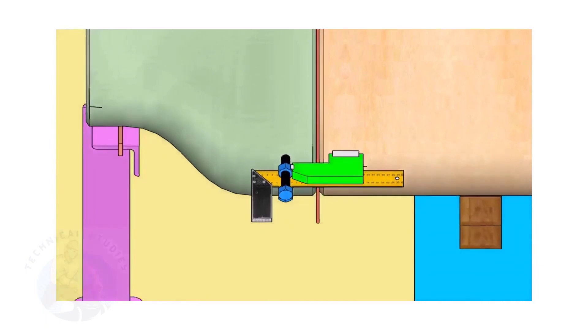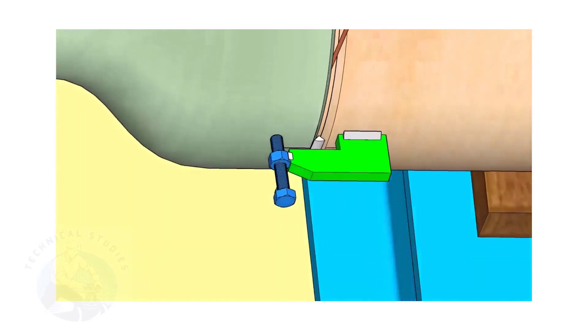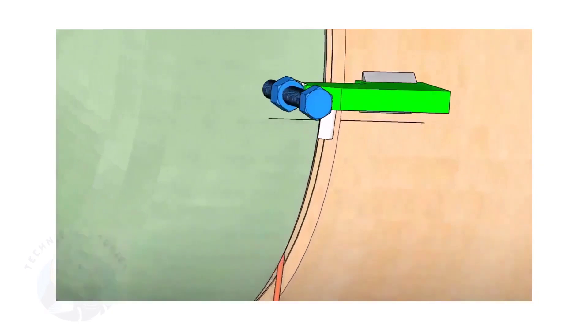Correct the straightness of the joint on both sides. If required, remove the gap rod. Tack weld on both sides.